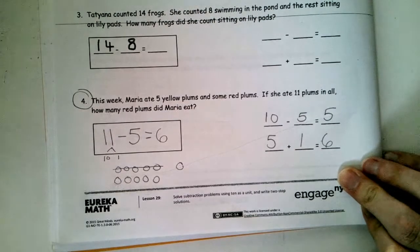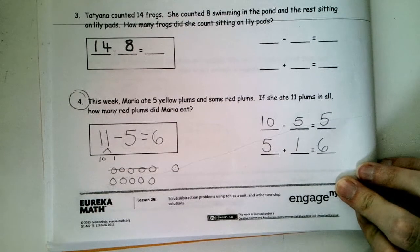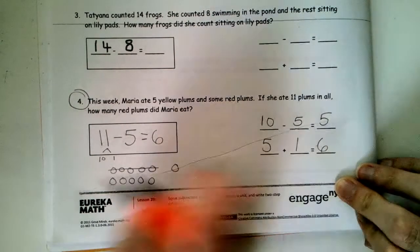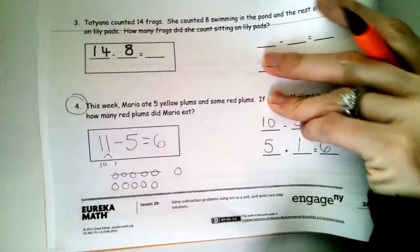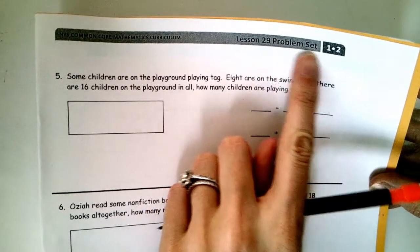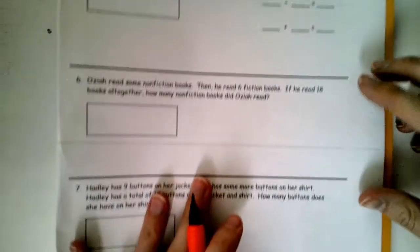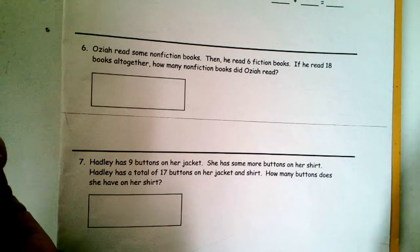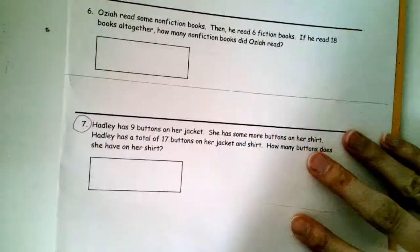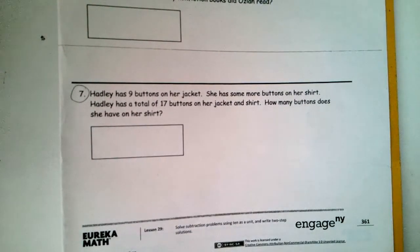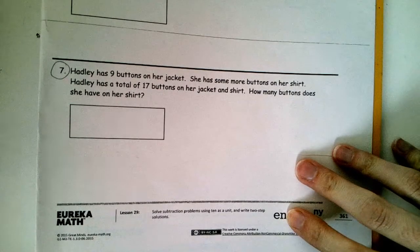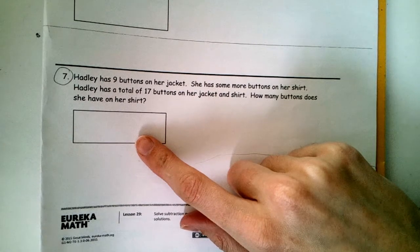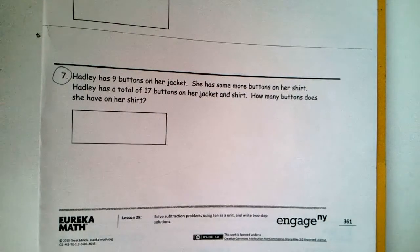Great work, first grader. This is not easy stuff. Let's do one more where you get to choose the strategy you use. You have to write a number sentence, but you must include a strategy to show how you answered the problem. I'm going to go to the next page. It should still say, lesson 29 problem said at the top. I'm going to skip down, let's see here. Why don't we just go all the way down to number 7. Read the story about Hadley.